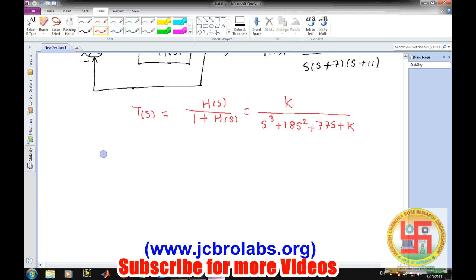Our characteristic polynomial will become s cube plus 18 s square plus 77 s plus K. Now we will create our Routh table from this closed loop transfer function. First two rows: we have highest power of s cube, so first row will start from s cube and then s square, then s, then s to the power 0. It is 1, then next power coefficient 77, then s square row will be 18 and then K.